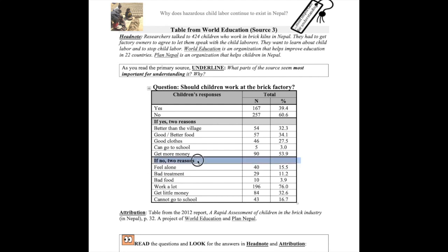If no, two reasons. The 257 children who said no, children should not work at the brick factory, gave these reasons: 15.5% said feel alone, 11.2% said bad treatment, 3.9% said bad food, 76% said work a lot, 32.6% said get little money, and 16.7% said cannot go to school.